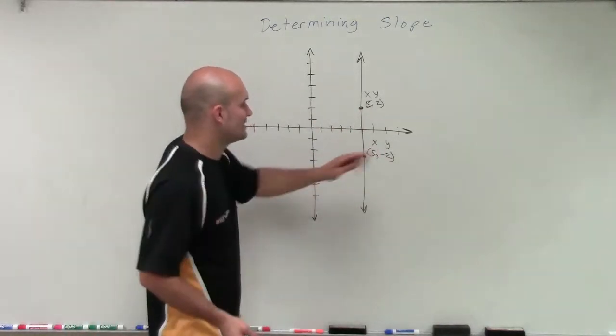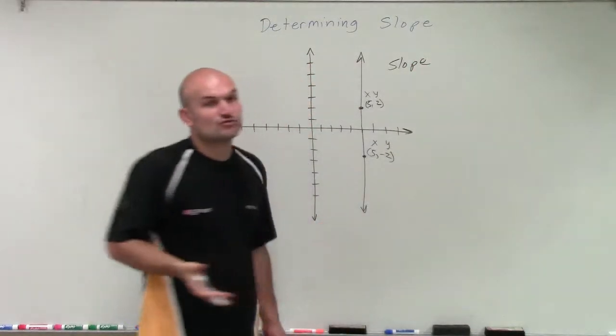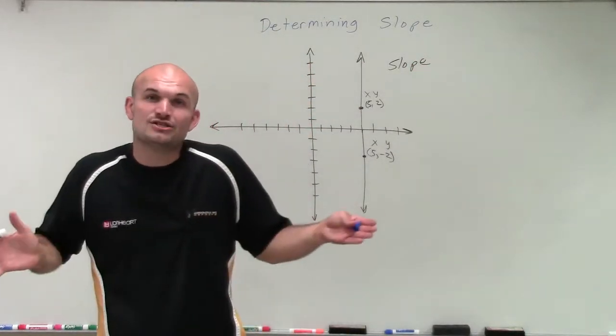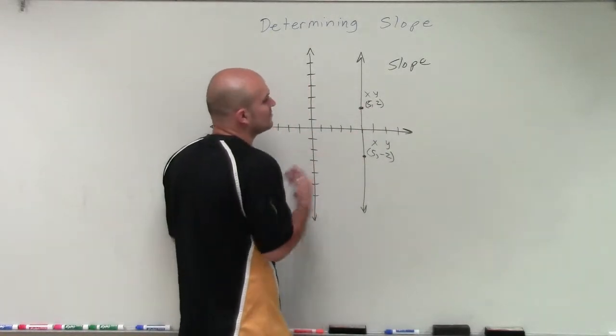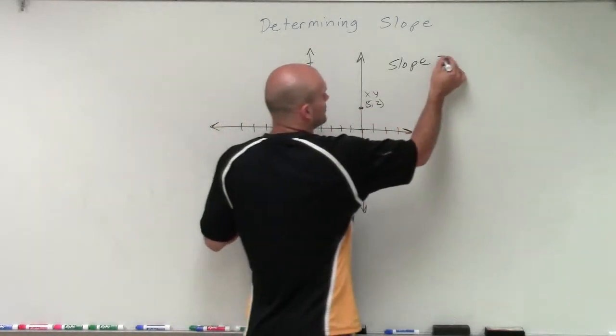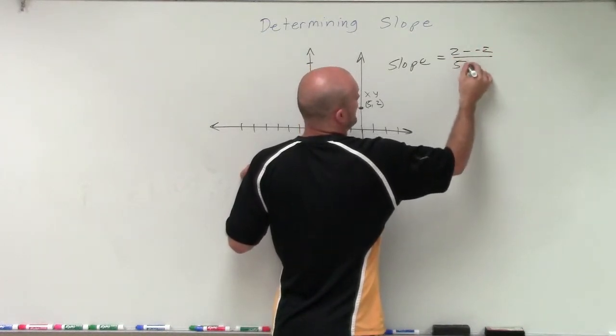So if I just wanted to subtract these two points, if I wanted to find the slope, I can't create a right triangle because there's no change horizontally. So I'm just going to find the change in my y coordinates. And it doesn't really matter which way you go. We'll just do 2 minus a negative 2 over 5 minus 5.